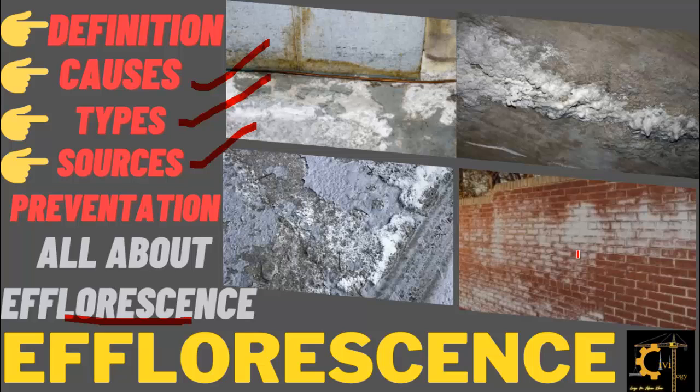Now the question is, why do we need to prevent this defect? First of all, this is mainly due to the humidity in your building. And humidity is the best habitat for the growth of bacteria. And bacteria in turn cause different diseases. So that's why it is important to prevent this defect.